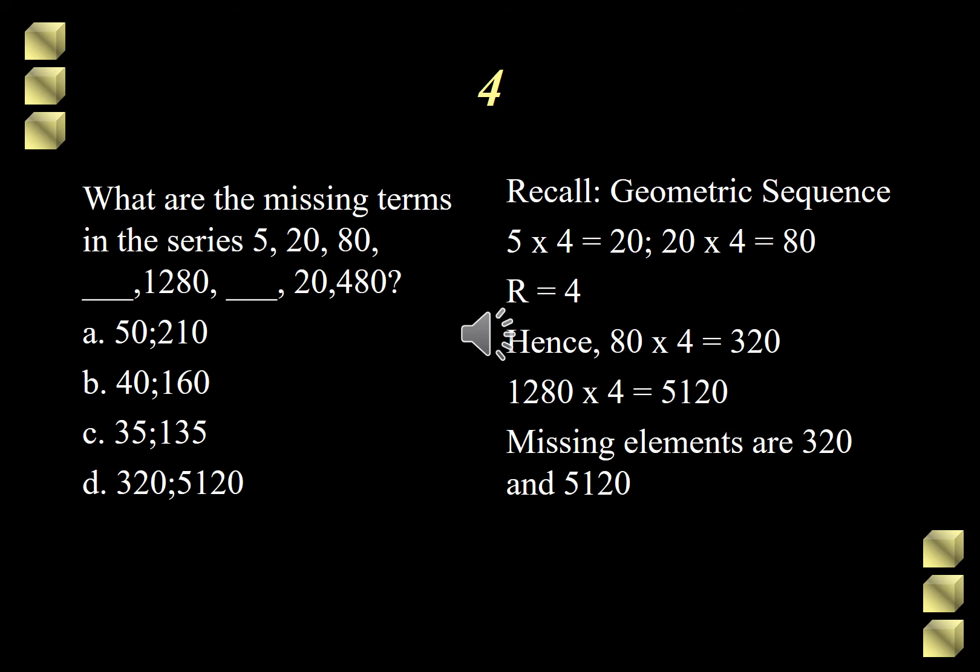Since we have already established a pattern, which is multiplying by 4, we can proceed with multiplying 80 by 4. That should give us 320. Next is the blank after 1,280. Multiplying 1,280 still by 4 will give us 5,120. Hence, the correct answer is letter D, 320 and 5,120.